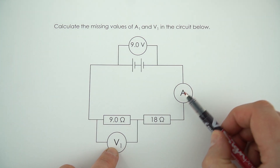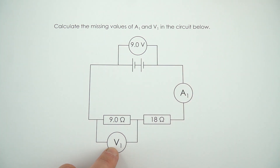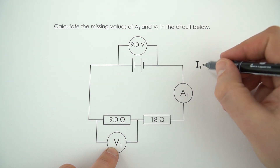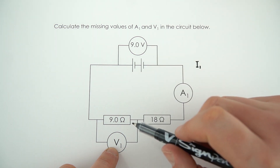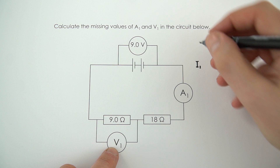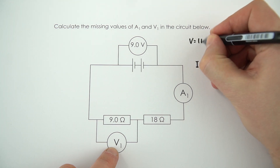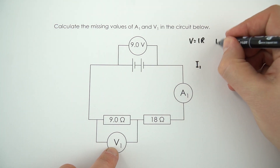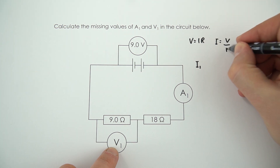In order to work out the value at A1, I'm just going to call this I1. To work this out, what we need to know is the potential difference and the total resistance. You've got to remember that V is equal to I times R, so we can rearrange this to say that I is equal to V divided by R.